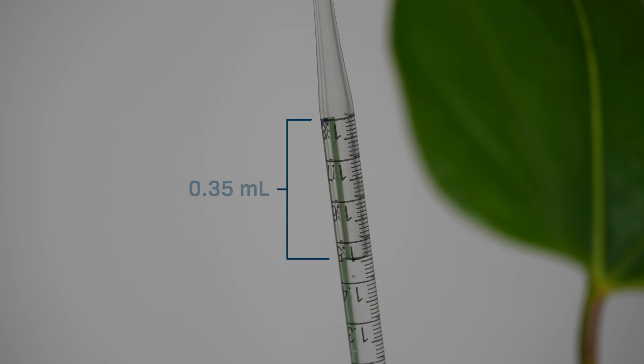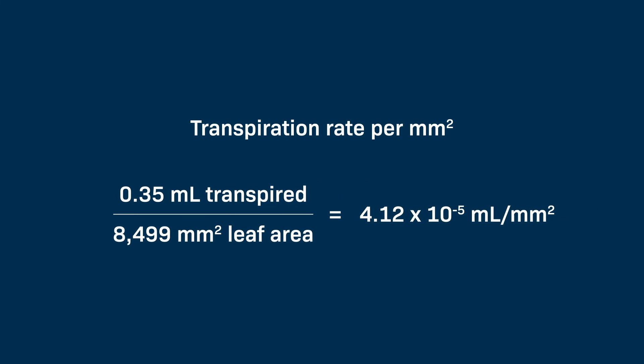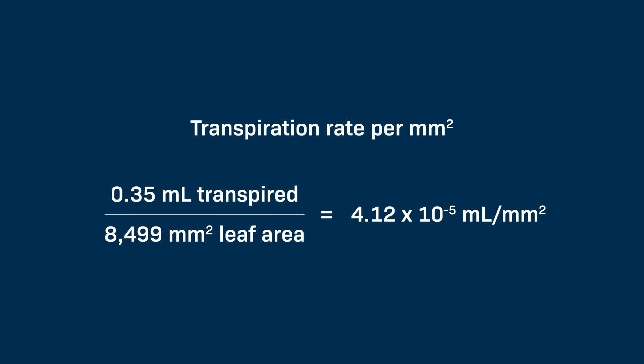Wow, it transpired 0.35 mils of water! Way to go, leaf! To calculate the transpiration rate per square millimeter of leaf surface area, I'll divide the volume transpired by the total leaf surface area. Looks like this leaf is transpiring at a rate of 4.12 times 10 to the negative fifth mils per square millimeter.